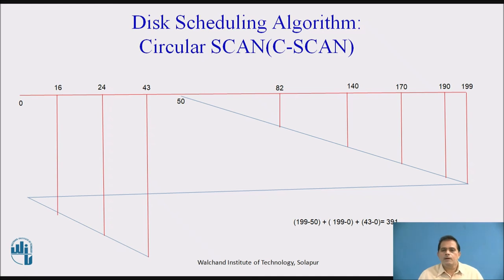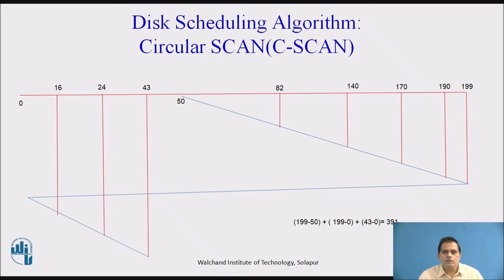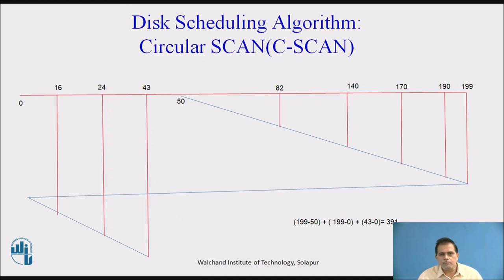So we have calculated the number of head movements done by the disk controller. We are moving from 50 to 199, so we write 199 minus 50. Then we are moving from 199 to 0, so we write 199 minus 0. Then we are moving from 0 to 43, so we write 43 minus 0. The total value is 391. So 391 is the total number of track movements taken by the head to move from one track to another.